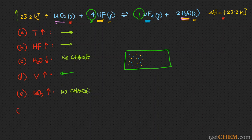Finally, Part F: if you add H₂ to the system, you also expect no change. The reason is that H₂ is not in this equilibrium at all — it is neither a reactant nor a product. So H₂ not being part of this equilibrium, if you add it into the system while maintaining the same volume, it would have no effect on the position of the equilibrium.